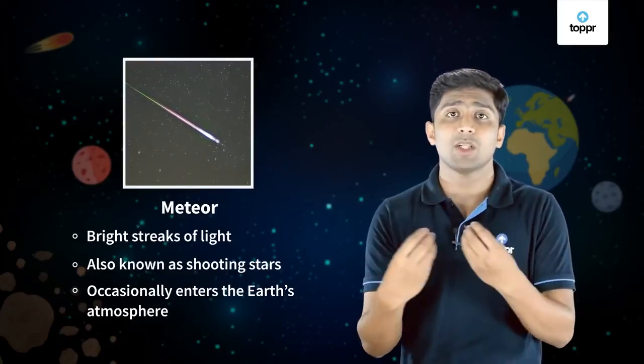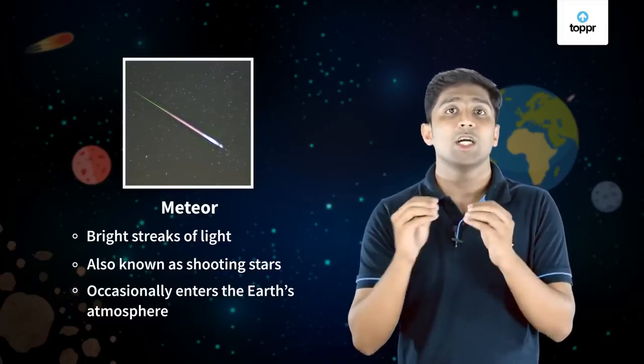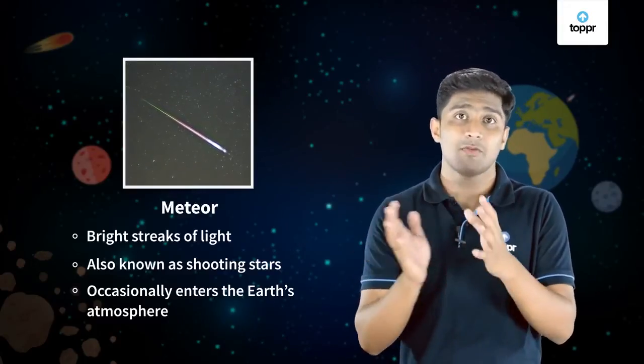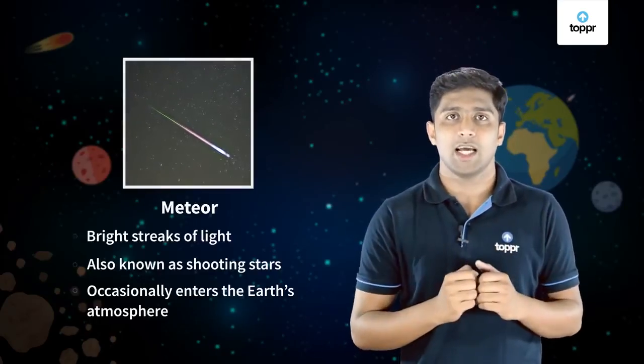These meteors will be coming with a very high speed and when they enter the Earth's atmosphere, due to friction, they get heated up. Because of friction, they get heated up and appear as a streak of light.